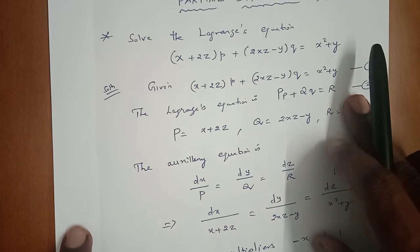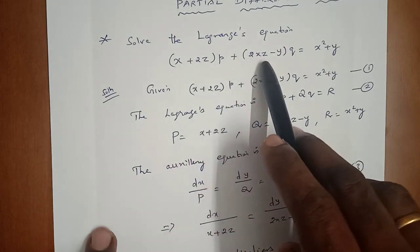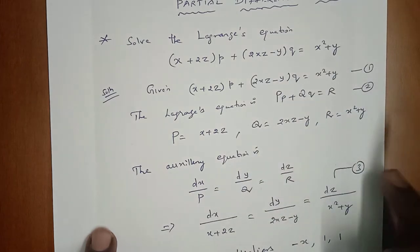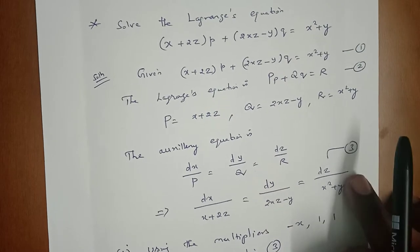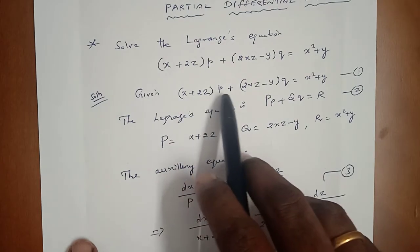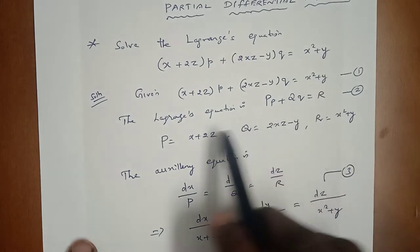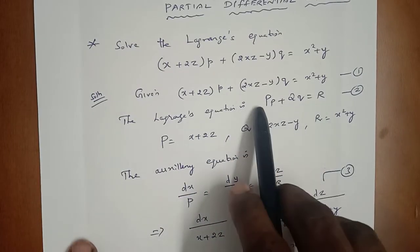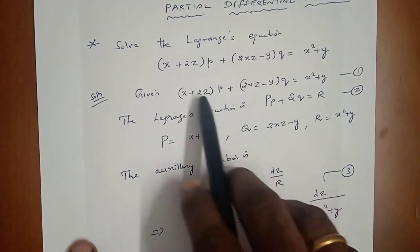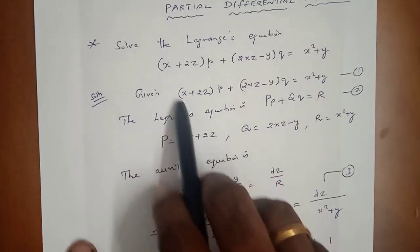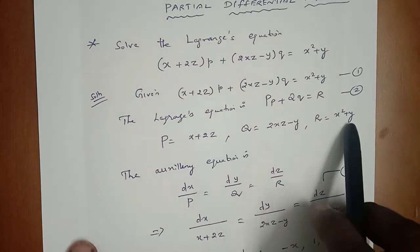First sum: Solve the Lagrange's equation (x + 2z)p + (2xz - y)q = x² + y. To solve this equation, we take (x + 2z)p + (2xz - y)q = x² + y as equation number 1. The Lagrange's equation form is Pp + Qq = R. So, the capital P value is x + 2z, capital Q value is 2xz - y, and capital R value is x² + y.